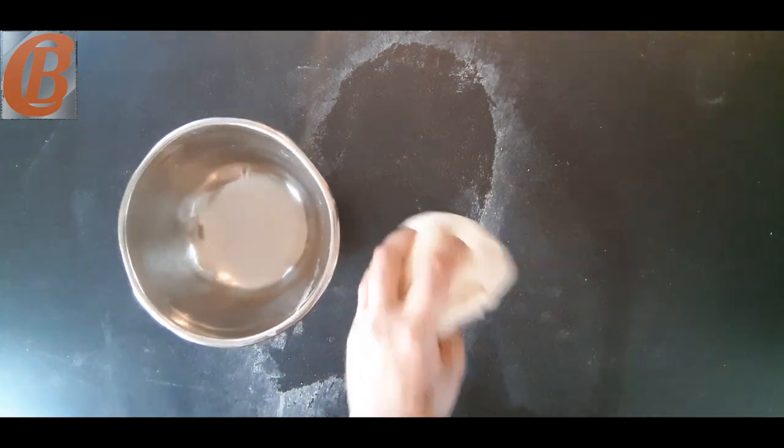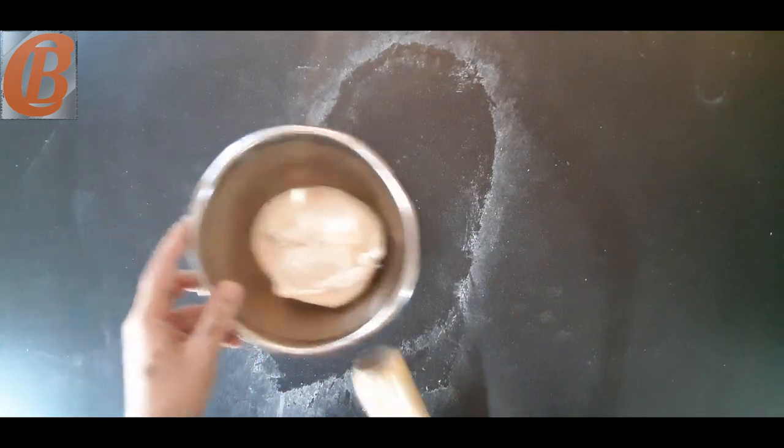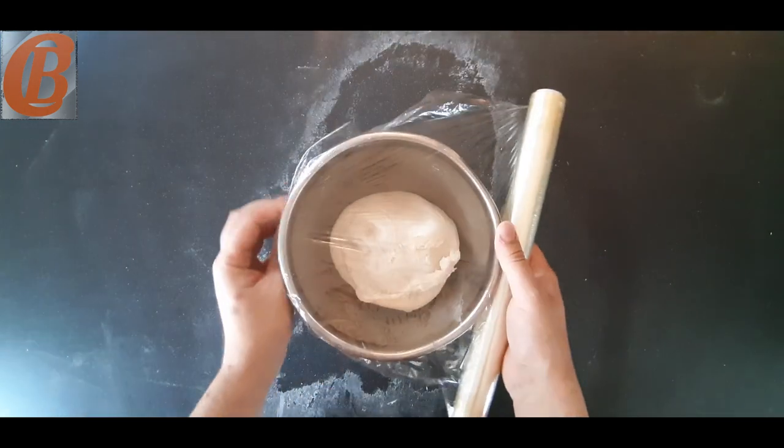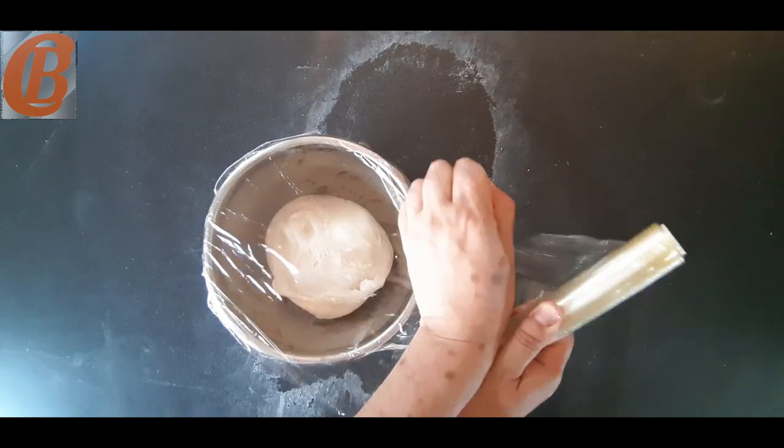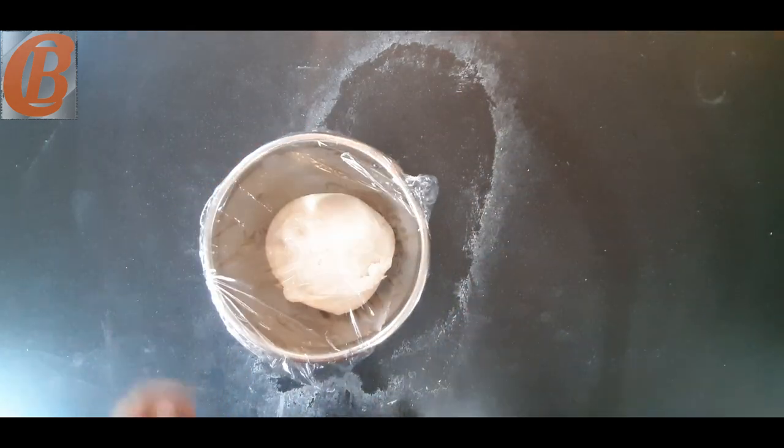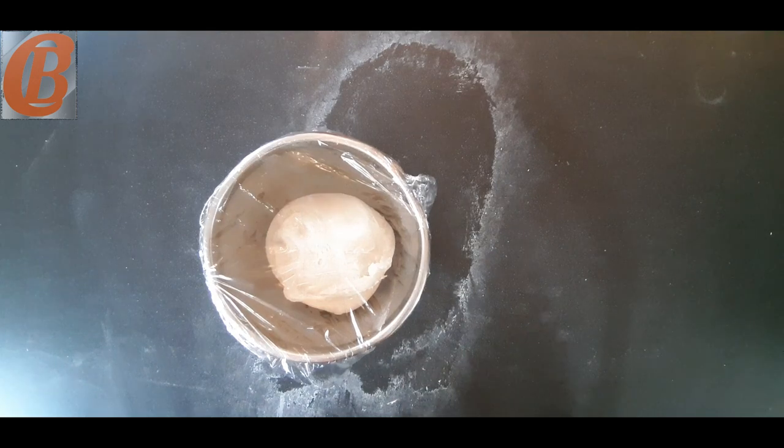So once you've got that good gluten development, you're going to put it in a bowl, cover it with cling film and leave it in a warm place. Now a lot of recipes will say for an hour, it's until doubled in size. It took mine about an hour and a half on this occasion, but it can be more, it can be less.